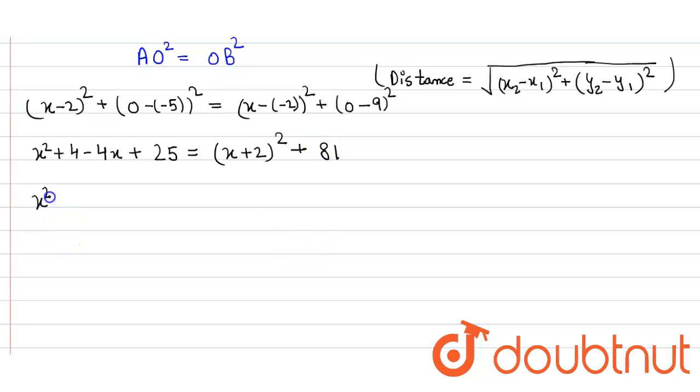So here we take x² - 4x + 29 is equal to x² + 4 + 4x + 81.